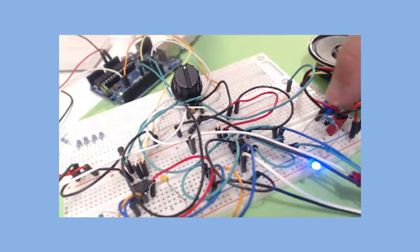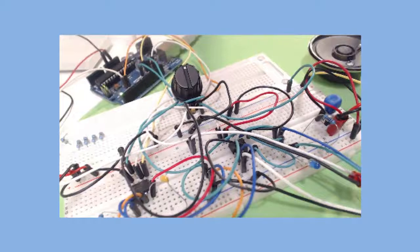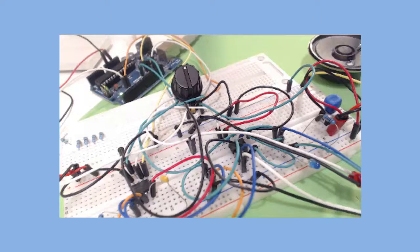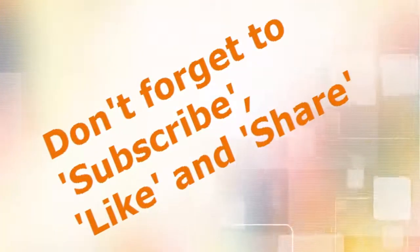How about that? Well, that just about covers it for this episode. I hope you get a chance to use rotary encoders in some of your projects. If you do, share them with us. In the meantime, this is WB7FHC saying 73s. And hey, don't forget to subscribe, like, and share.